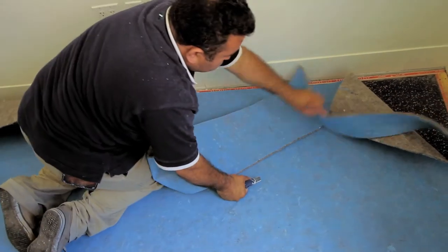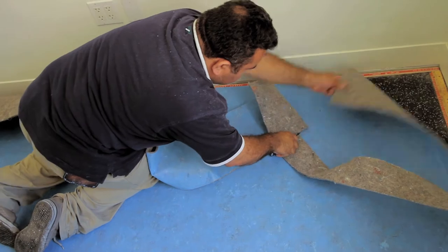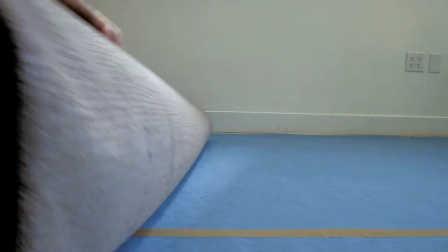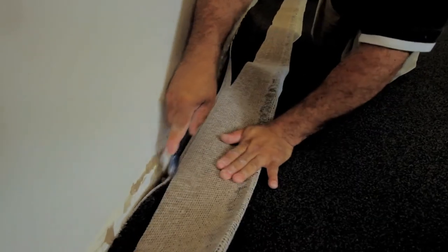After the grip was applied, carpet cushion was put throughout the room just inside the carpet grip. Then carpet was laid on top of the foam. The extra carpet was cut away and the edges were tucked in.